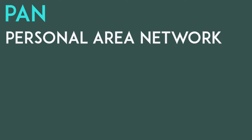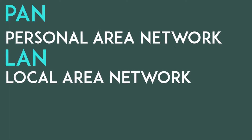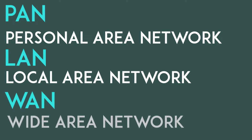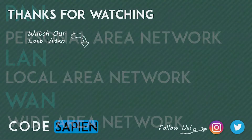So remember: a PAN is a personal area network used by one person; a LAN is a local area network which is contained within a certain area; and a WAN is a wide area network which covers a large area made up of interconnected LANs.